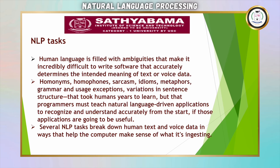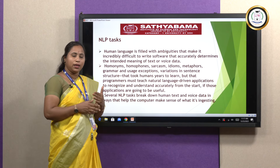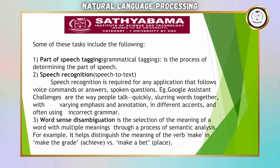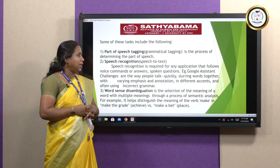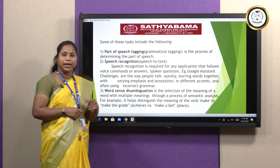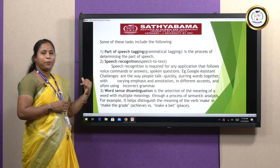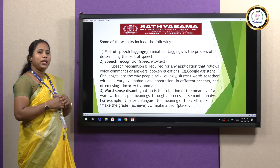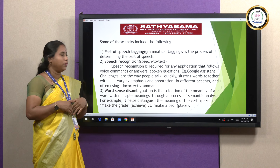The main task of NLP is to break down human text or voice data in a way that a computer can understand. Some important tasks done by NLP are: part-of-speech tagging, also called grammatical tagging, which determines the parts of speech — identifying nouns and verbs in a sentence. The second task is speech recognition, which converts speech to text and helps recognize voice commands, allowing the user to interact with the system and ask questions, such as with Google Assistant.